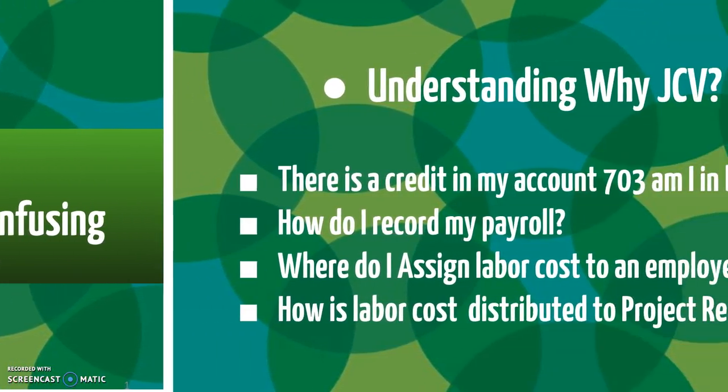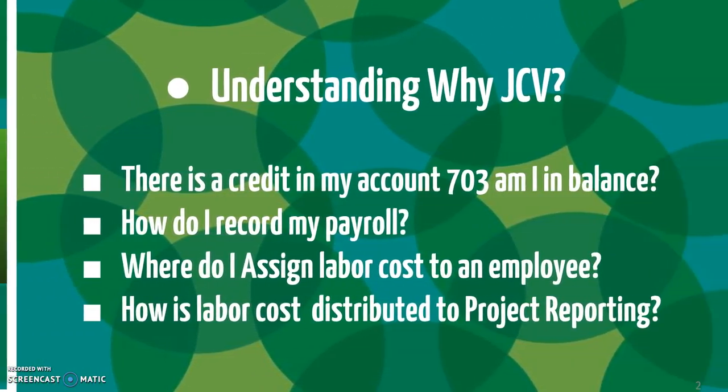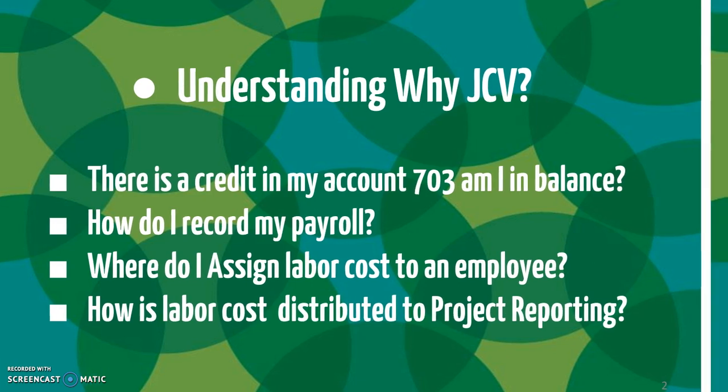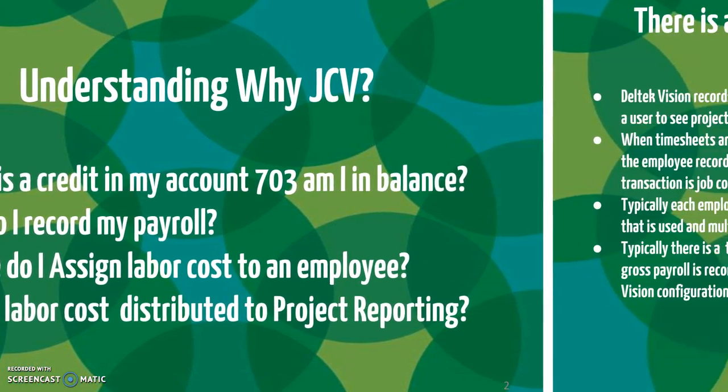So what are we going to cover? Understanding why job cost variance — there's a credit in my account 703. Am I in balance? How do I record my payroll? Where do I assign labor costs to an employee? And how is labor cost distributed to project reporting?